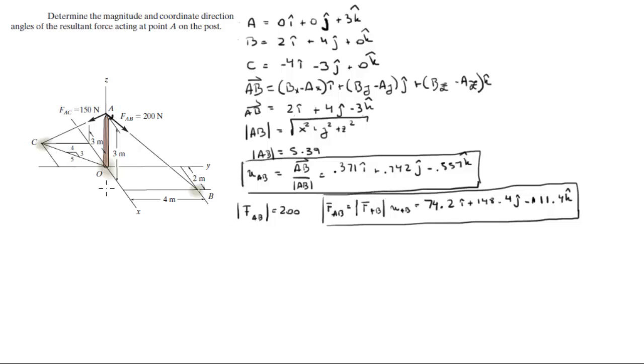Now we're going to repeat the same steps to find this force vector AC. First we need the vector from A to C. This vector comes out to be negative 4i minus 3j minus 3k. The magnitude of this vector calculated like we did before comes out to be 5.83.